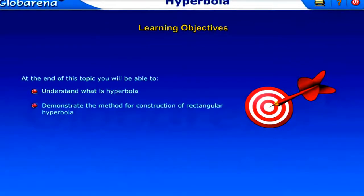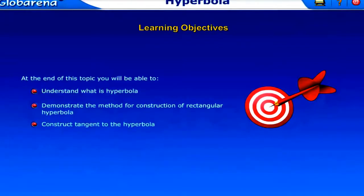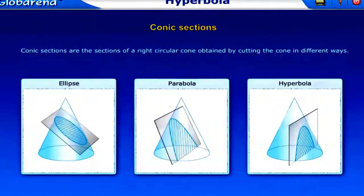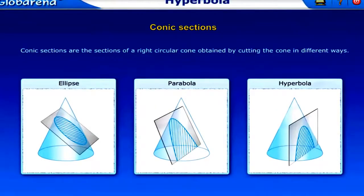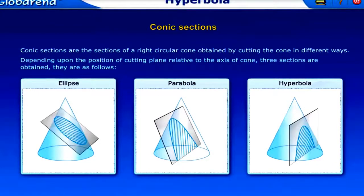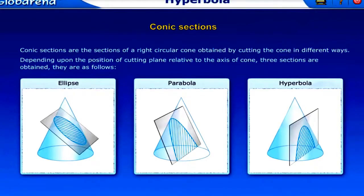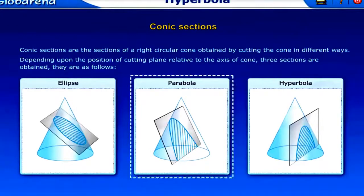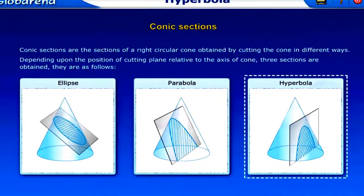Demonstrate the method for construction of rectangular hyperbola and construct tangent to the hyperbola. Conic Sections are the sections of a right circular cone obtained by cutting the cone in different ways. Depending upon the position of cutting plane relative to the axis of cone, three sections are obtained: Ellipse, Parabola, and Hyperbola.